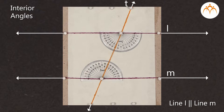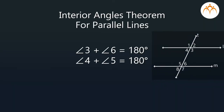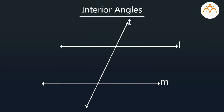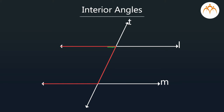We can say that when a transversal cuts two parallel lines, we get two pairs of interior angles such that in each pair, the sum of their measures is 180 degrees. Hence, the angles are supplementary. To remember the position of interior angles, we can use the shape of C — these two interior angles lie in the corners of C, whereas these two interior angles lie in the corners of a reverse C.